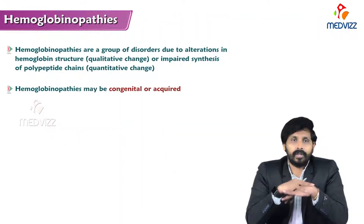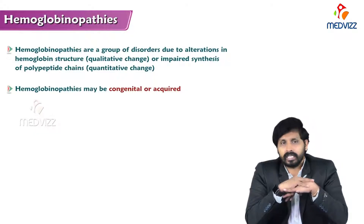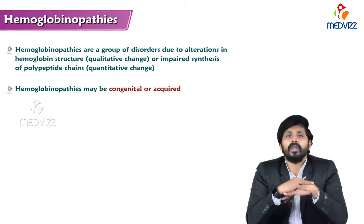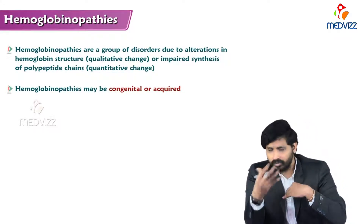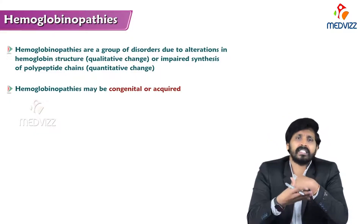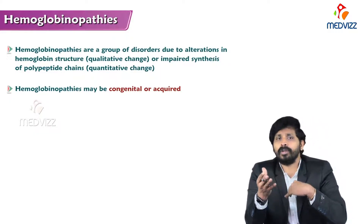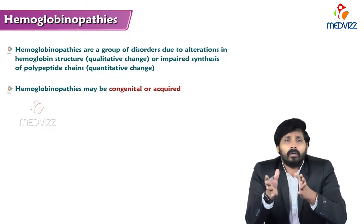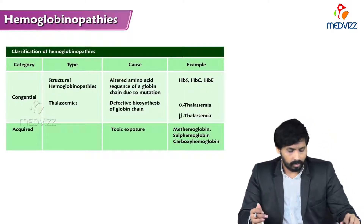In this video we will discuss various types of hemoglobinopathies. Before going to the various types, we should be aware of what hemoglobinopathy is. If there is a structural change in heme or a change in polypeptide chain synthesis, it leads to a condition known as hemoglobinopathy. Hemoglobinopathies are of two types: congenital and acquired.